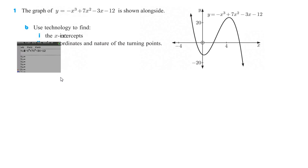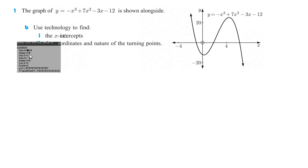Then we go to graph and hopefully it will show up nicely in our window. We'd like to see a little bit farther down and farther up, so I'm going to change my window. The y minimum I'm going to set to negative 20, and the y maximum — let's put that to 20 and see if that's enough to see both parts.